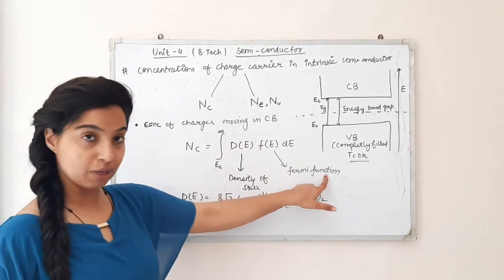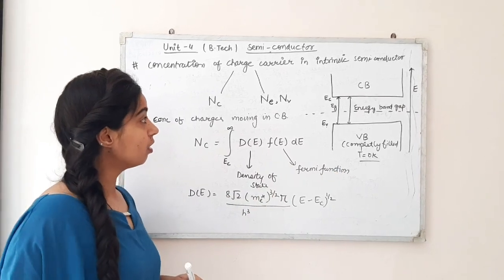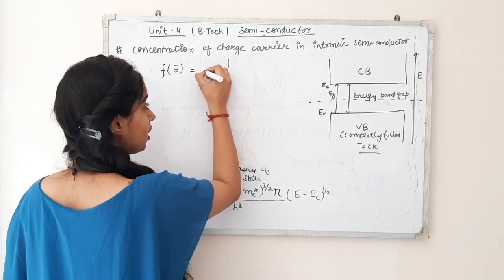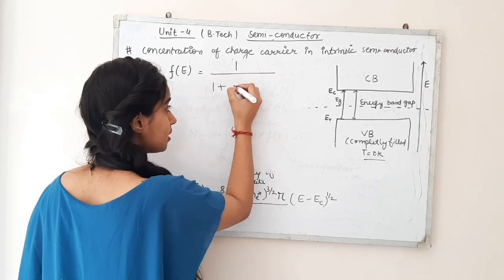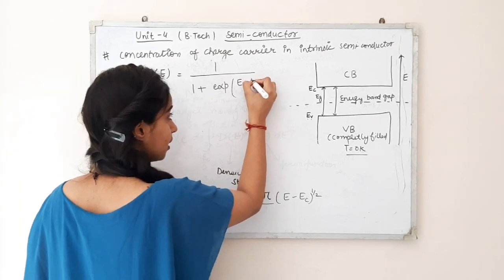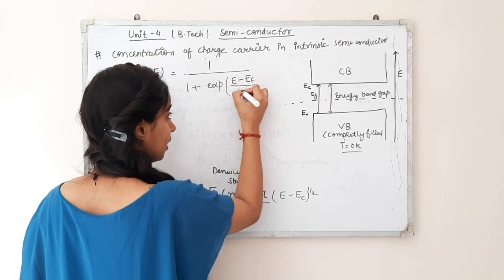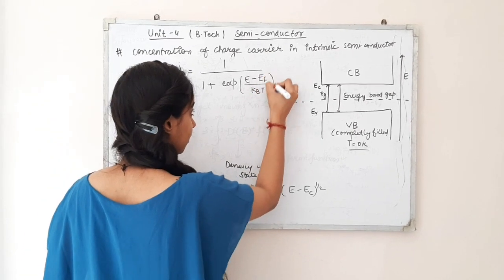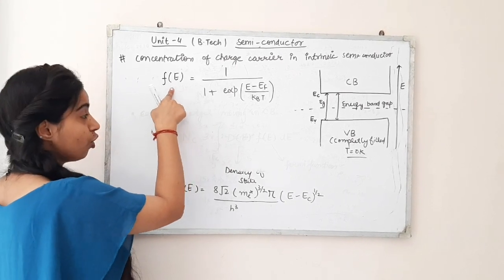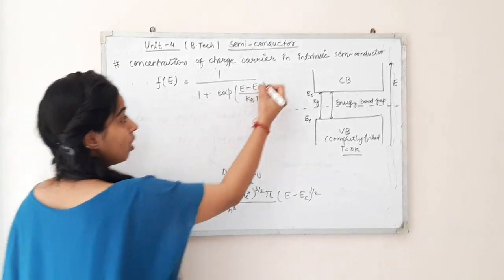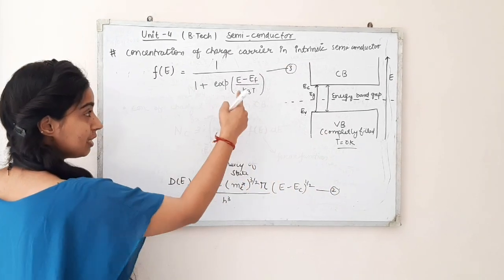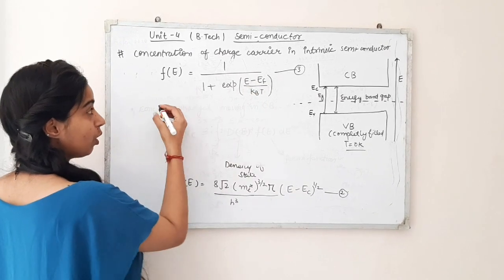Now what is F(E)? F(E) is the Fermi function, given as: F(E) = 1 / [1 + exp((E − EF) / kBT)], where EF is the energy of the Fermi level. This is equation 3, and equation 2 is D(E). We substitute equations 2 and 3 into equation 1.